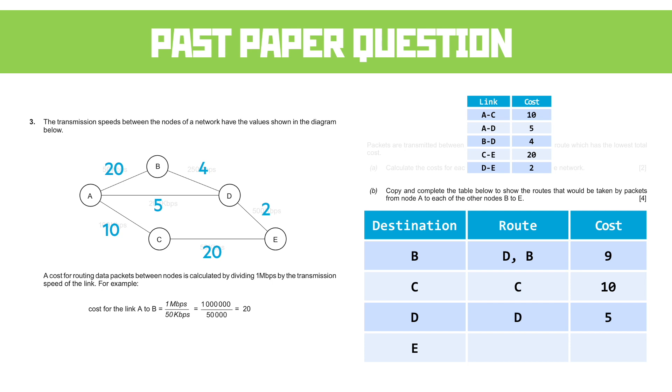If you look, we could go from A to B to D, that's 24. We could go from A to C to E to D, but we're looking at, what, 32 there, so we've obviously got the shortest route. And then E, we get to E in the quickest way by going from A to D to E, which gives us a total cost of 7.